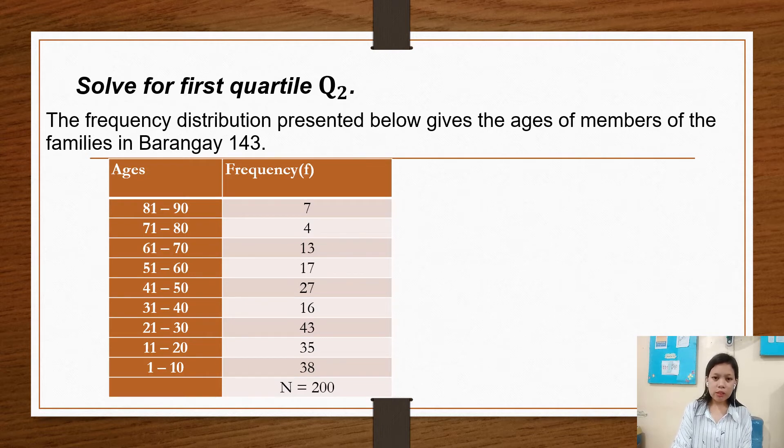So first, we have to solve for first quartile of grouped data. The frequency distribution presented below gives the ages of members of the families in Barangay 143.